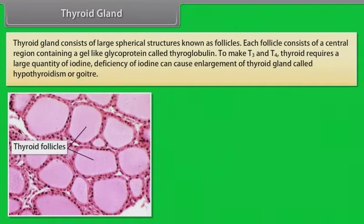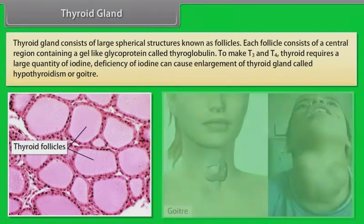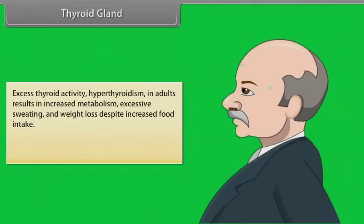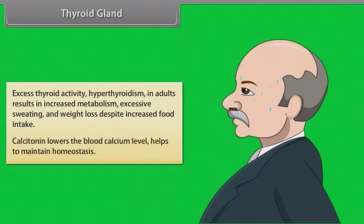The thyroid gland consists of large spherical structures known as follicles. Each follicle consists of a central region containing a gel-like glycoprotein called thyroglobulin. To make T3 and T4, the thyroid requires a large quantity of iodine. Deficiency of iodine can cause enlargement of the thyroid gland called hypothyroidism or goiter. Excess thyroid activity — hyperthyroidism — in adults results in increased metabolism, excessive sweating and weight loss despite increased food intake. Calcitonin lowers the blood calcium level and helps to maintain homeostasis.